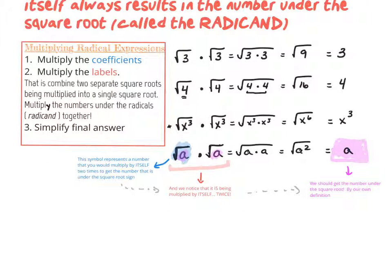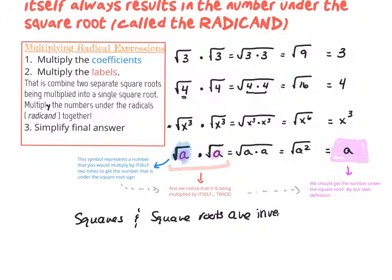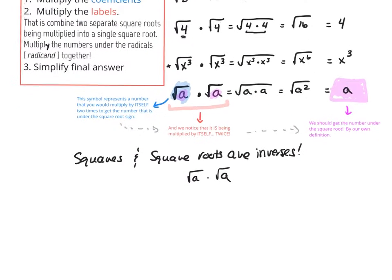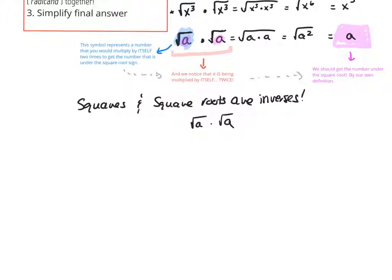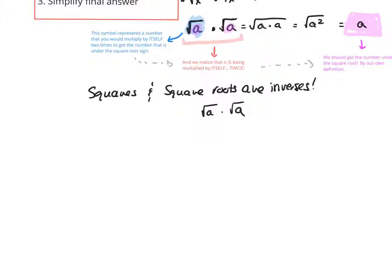Another way to see it: squares and square roots are inverses — they undo each other. So if I have the square root of a being multiplied by the square root of a, that's the same thing multiplied by itself twice, which I can rewrite as the square root of a, squared. And since squares and square roots undo each other, the result is just a.